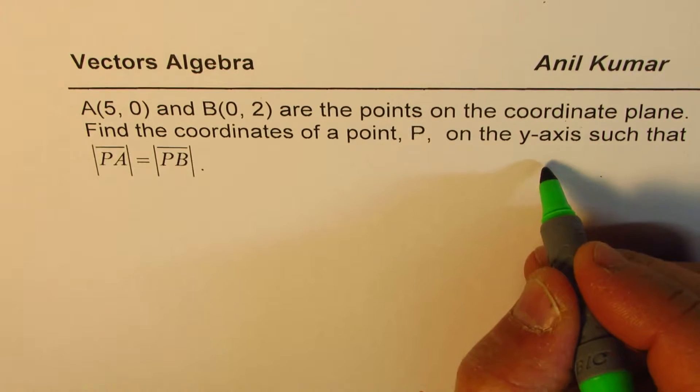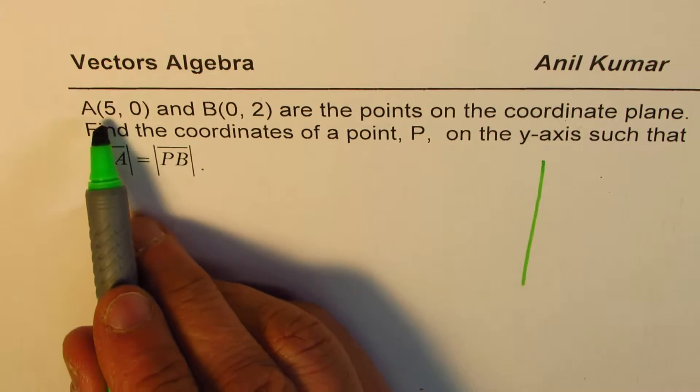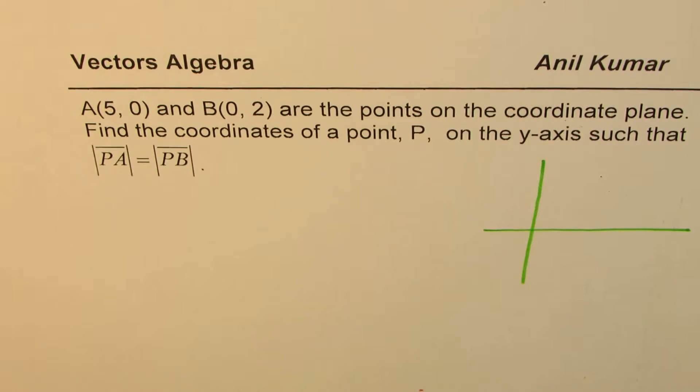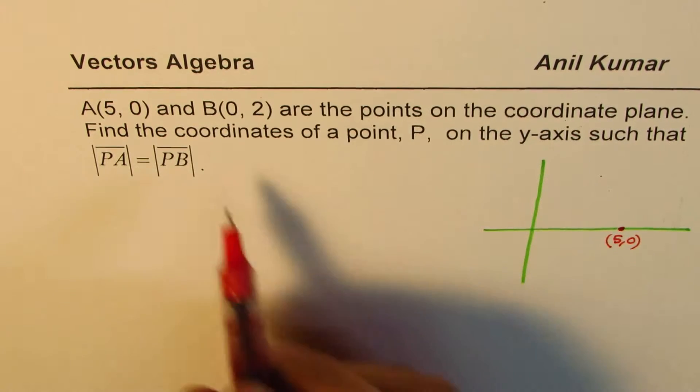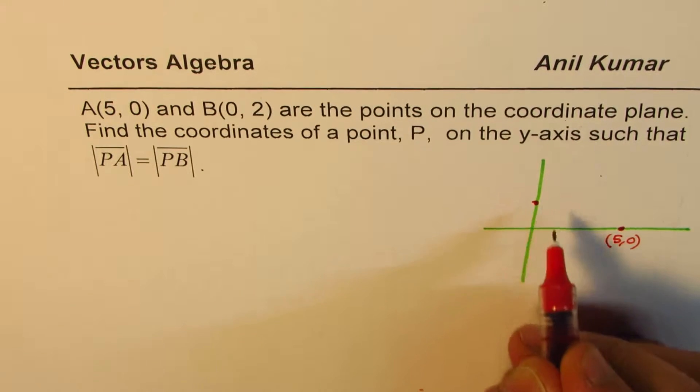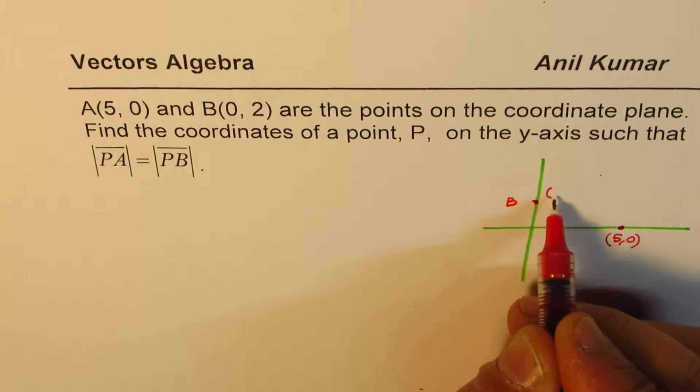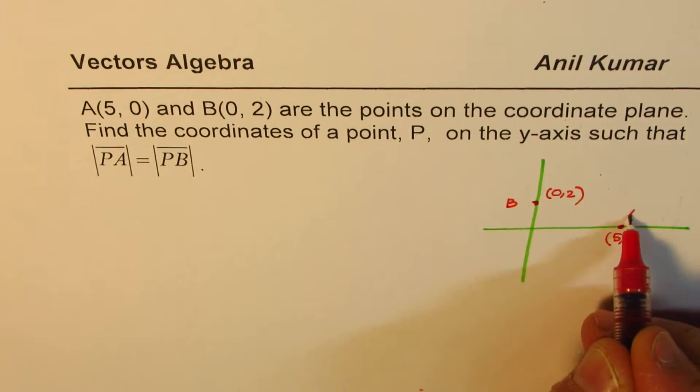So let's sketch the scenario. We are given two points: 5, 0 means x-intercept, so this point is A which is (5, 0). And then we have 0, 2, that means y-intercept. So this point is B which is (0, 2).